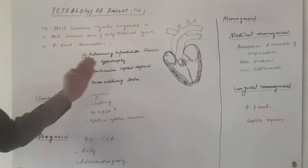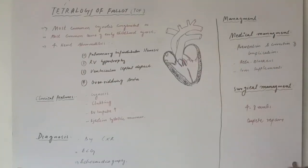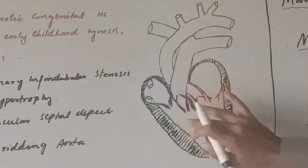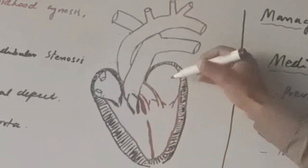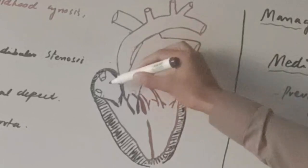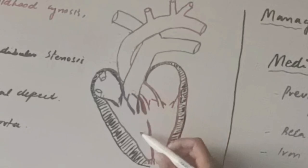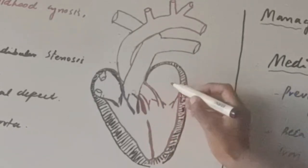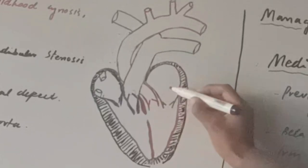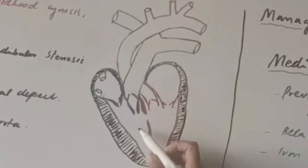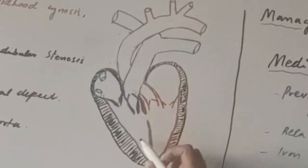Before going into the discussion of Tetralogy of Fallot, I am going to talk about the chambers and walls of the heart. I have drawn a heart here. The heart comprises four chambers: two are the atria — the left atrium and the right atrium — and two are the ventricles — the left ventricle and the right ventricle. The left atrium and left ventricle contain oxygenated blood, shown in red.